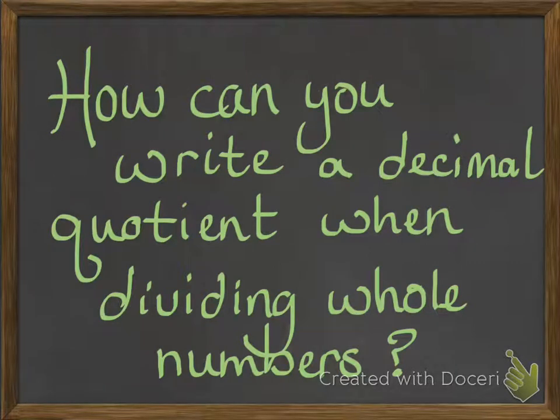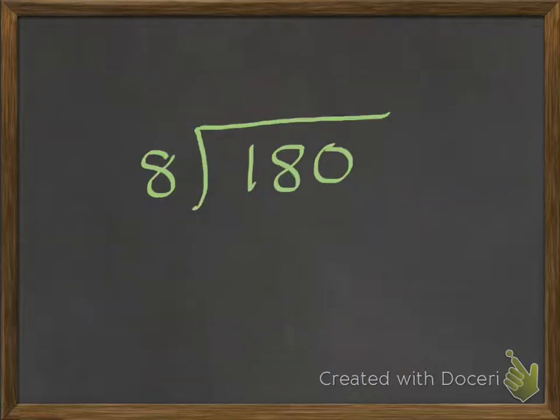Now here's something else we're going to look at: how can you write a decimal quotient when you're dividing whole numbers? So our quotient is going to have a decimal in it, but with our problem here, we don't have a decimal yet — but we're going to end up with one. Actually, this is the beginning of the end of the remainder. From now on, I'm going to be expecting you to not have remainders in your answers, because I'm going to show you how that remainder is no longer necessary. This is the fifth grade way of doing division — remainders are the fourth grade way. So get ready, here we go.